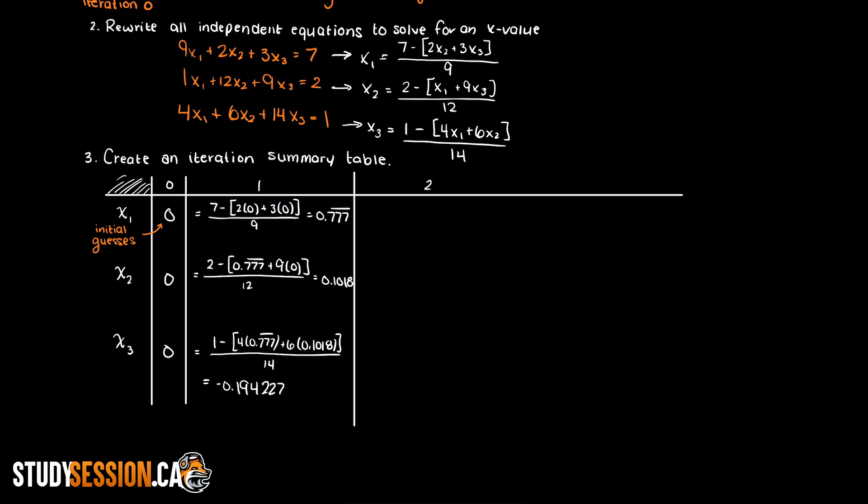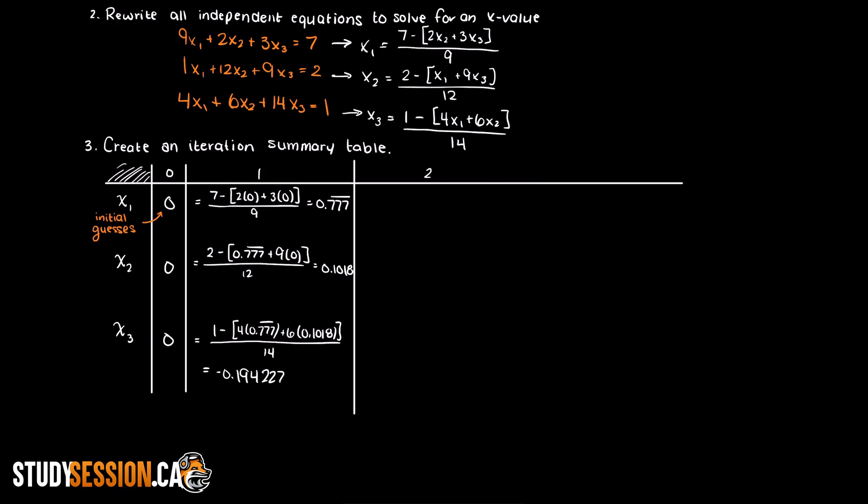Now we continue this process until we have a sufficient level of accuracy. This part is much easier using a computer program as you can just tell the program to check after every step how close your x values will get to the right hand side of your equation. I'll give you a few seconds here to pause the video and try to perform a few Gauss-Seidel steps on your own to make sure that you actually understand.